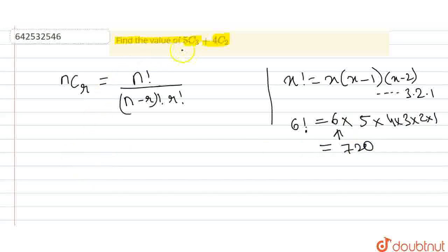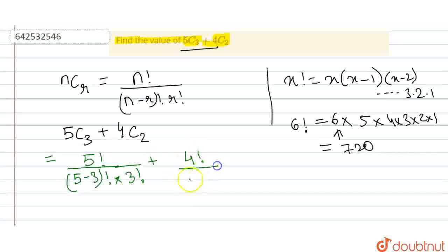So the question is asking for 5C3 plus 4C2. This is equal to 5 factorial divided by 5 minus 3 factorial, the whole factorial into 3 factorial. Here R is 3 and N is 5. So it will be like this. And it will have 4 factorial divided by 4 minus 2 factorial into 2 factorial.